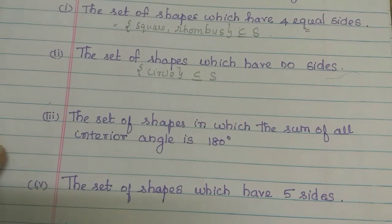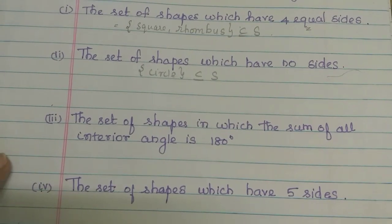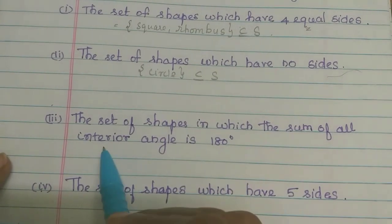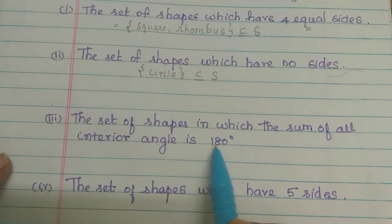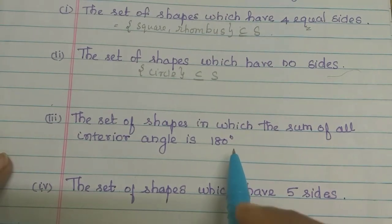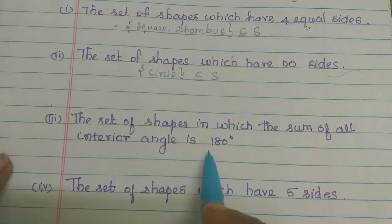The set of shapes in which the sum of all interior angles is 180 degrees. The sum of angles is 180 degrees, which corresponds to a triangle.